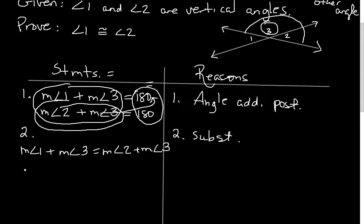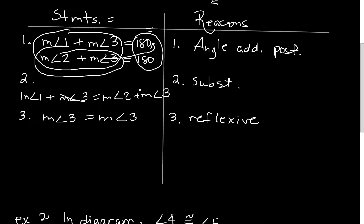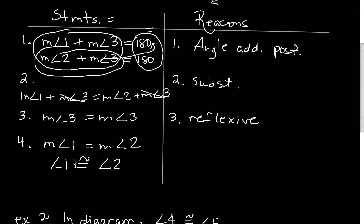Next, measure of angle three equals measure of angle three — that's the Reflexive Property. Then we subtract angle three from both sides, and we get measure of angle one equals measure of angle two. We can then switch from measure to congruence: angle one is congruent to angle two. Remember, when you're talking about measure you're talking about actual degrees; when you're talking about congruence, you're talking about shapes that match up perfectly.